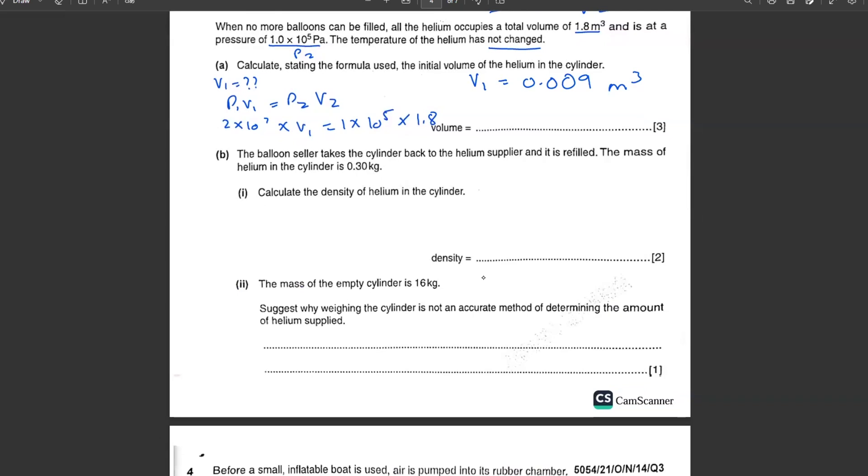Let's further move ahead. The balloon seller takes the cylinder back to the helium supplier and it is refilled. Calculate the density of the helium in the cylinder. Density equals mass over volume. Mass is 0.3, volume is 0.009. 0.3 divided by 0.009. Density comes out to be 33 kg m^-3. If you are putting a slash, then you write m raised to the power of 3.